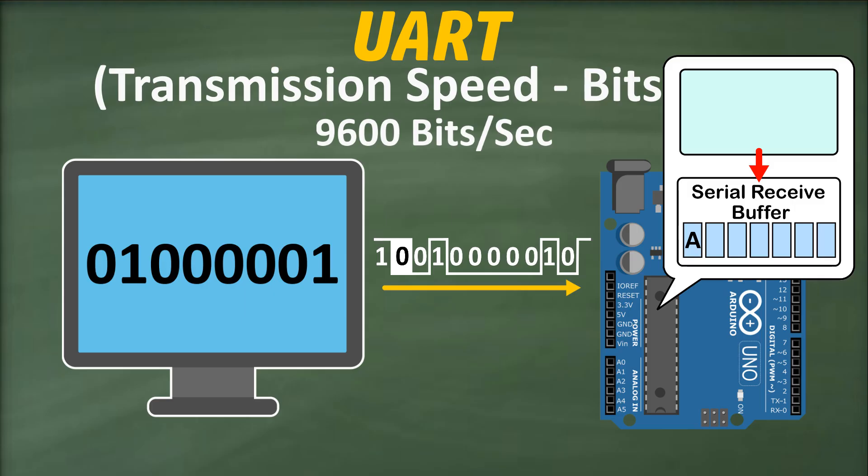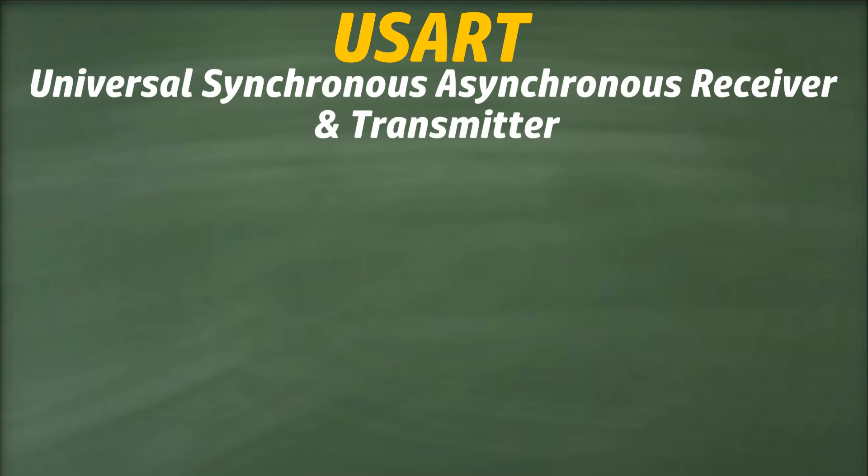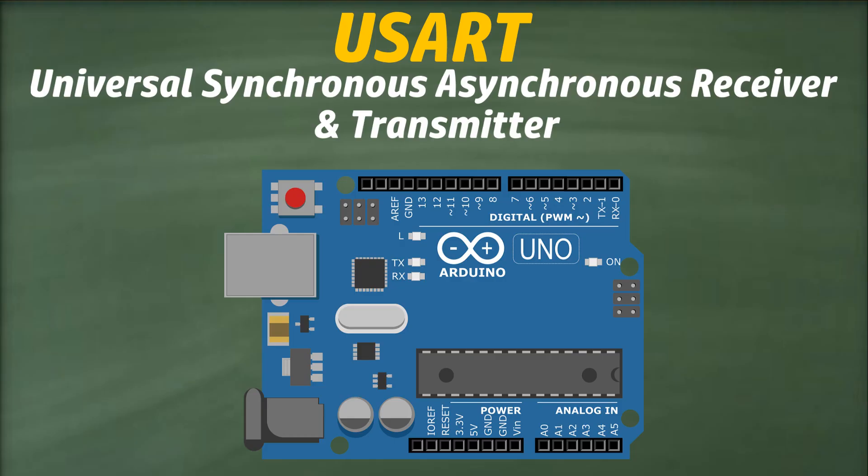The hardware responsible for assembling incoming bits into bytes is called the USART, Universal Synchronous, Asynchronous, Receiver, and Transmitter. This module handles the UART communication on the ATmega328 chip. It uses the TX and RX pins of the ATmega chip to transmit and receive data serially, which correspond to pins 1 and 0 on the Arduino Uno board.